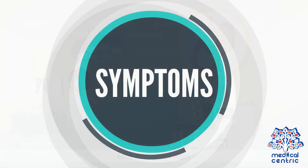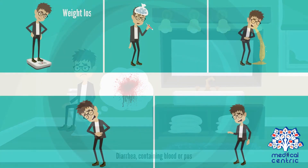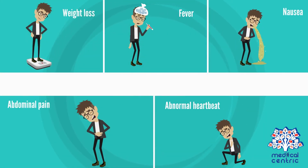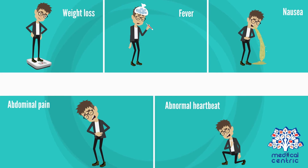Symptoms include diarrhea containing blood or pus, weight loss, fever, nausea with or without vomiting, abdominal pain and cramping, and abnormal heartbeat if you become dehydrated.